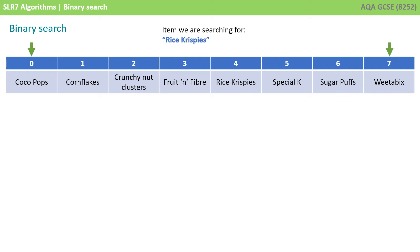Here we've got a dataset of 8 breakfast cereals, and they each have an index of 0 to 7. We've set a left pointer over the first item, Cocoa Pops, with an index of 0, and a right pointer over the last item, Weetabix, with an index of 7.